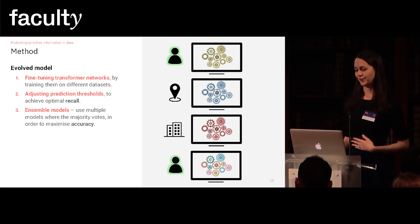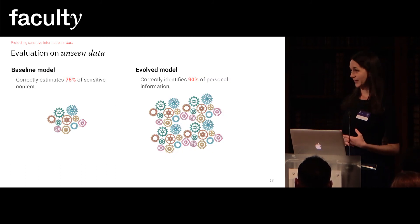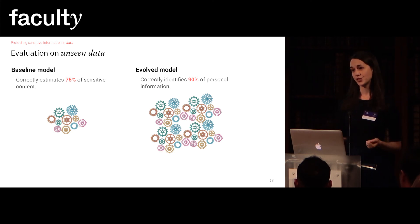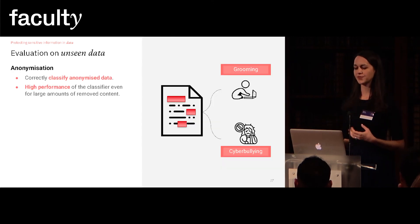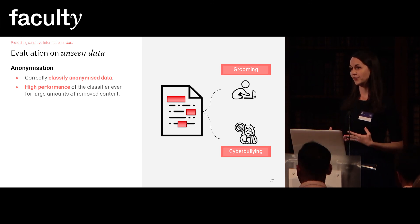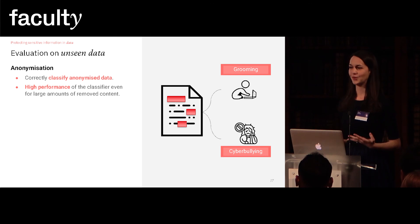So now we'll see how our model performs. Compared to the baseline, which was able to correctly identify 75% of sensitive content, our improved model correctly identifies 90% of personal information — a crucial improvement of 15%. At the same time, our results show that most context and useful information is still preserved in the data, even after removing the sensitive content from it. This means that the predictive power of algorithms for classification of this data will not be affected.